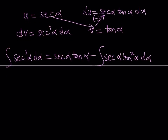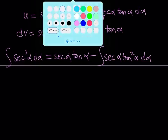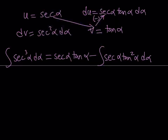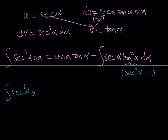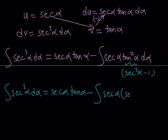This is also a tough integral, but here's a useful trick: if you have tangent squared in your integrand, you can replace it with secant squared alpha minus 1, since secant squared equals 1 plus tangent squared. This allows us to split the integral. Let's go ahead and replace tangent squared with secant squared minus 1.